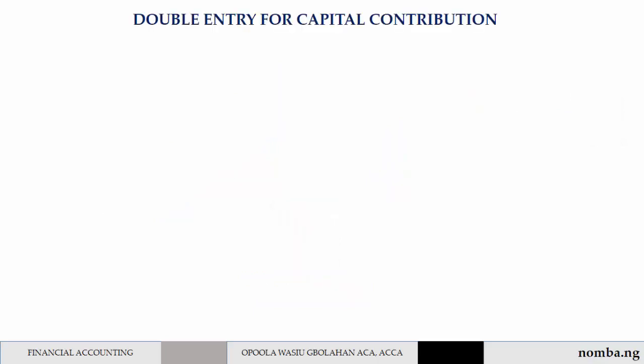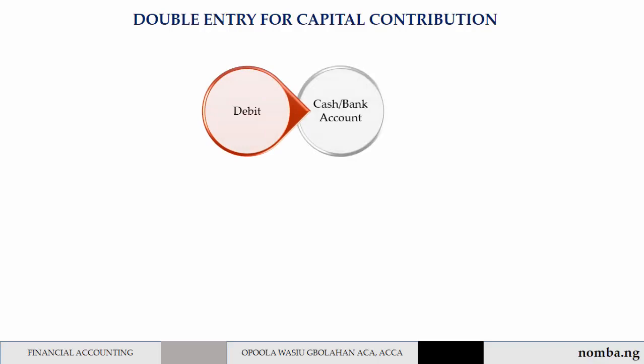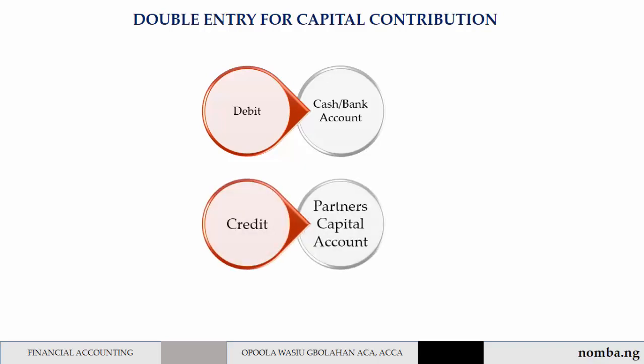The double entry for capital contributed by each partner is as follows: the partnership will debit the cash or bank account to recognize the money received, and they will credit a partner's capital account with the amount contributed by each partner.